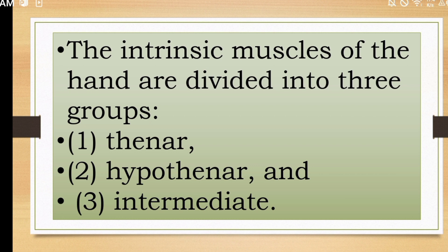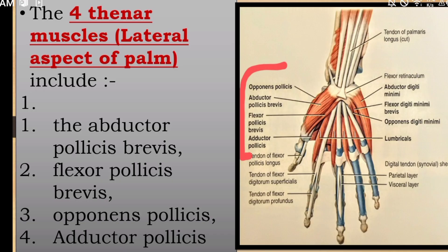There are muscles in the thenar group. The muscles in the thenar group are the abductor pollicis, flexor pollicis, opponents pollicis, and adductor pollicis. On the right side of the picture, the muscles are marked as well.